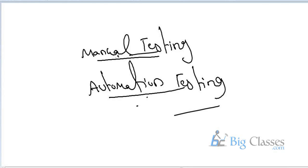Here we have two applications: one is www.bclasses.com and the second one is www.yahoo.com. To conduct testing on bclasses.com, only manual testing is enough — because it is a very small application with very small requirements. But for yahoo.com, manual testing is not possible, so we need an automation tool. If it is a small project, test manually; if it is a big project, use automation tools.